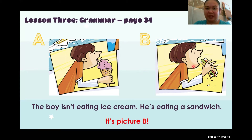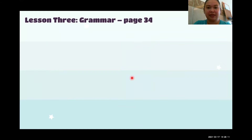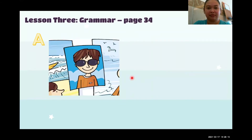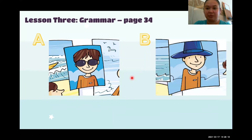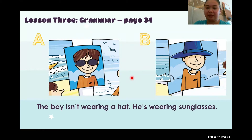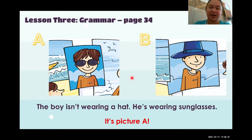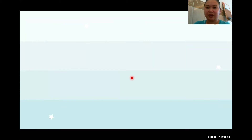Let's try to practice the other pictures. This is picture A and this is picture B. I'm going to read the sentence — you tell me if it's picture A or picture B: 'The boy isn't wearing a hat. He's wearing sunglasses.' Is it picture A or picture B? The answer is picture A. Yes, he's wearing sunglasses.